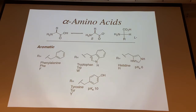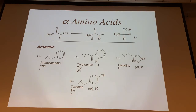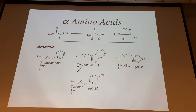Tryptophan has the indole heterocycle — considered nonpolar and non-ionizing. The lone pair on the nitrogen is part of the aromaticity, so it's never protonated. Code is W — T was already taken by threonine. The joke is that when Elmer Fudd says tryptophan, he says 'twiptophan,' and that's the W. Tryptophan has a methylene group and then the indole as its R group.